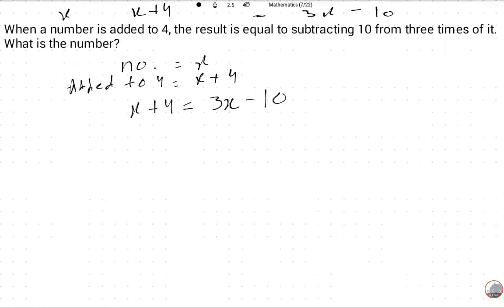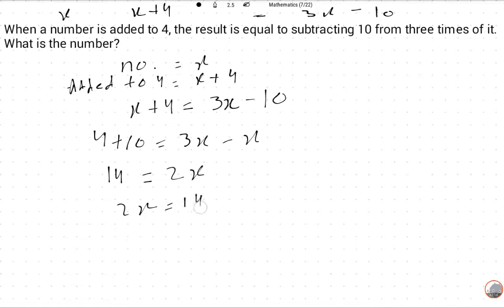Now we arrange: 4 plus 10 is equal to 3x minus x. It's up to you how to arrange, it's your choice. So this is 14 is equal to 2x. 2x is equal to 14. We can write this because it's easy to solve.